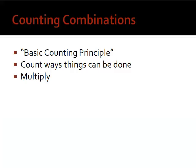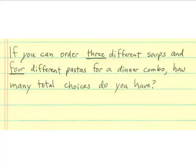Counting combinations was another type of problem in this section. Basic counting principle says that you count the ways things can be done. And if there's more than one way, you just multiply them together. That's how you combine combinations. So, here's an example. If you can order three different soups and four different pastas for a dinner combo, where you have to have at least one soup and one pasta, then how many total choices do you have? Well, it's basically three times four, so you have 12 different choices.